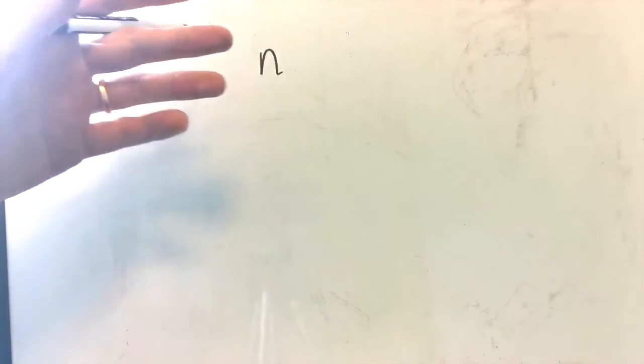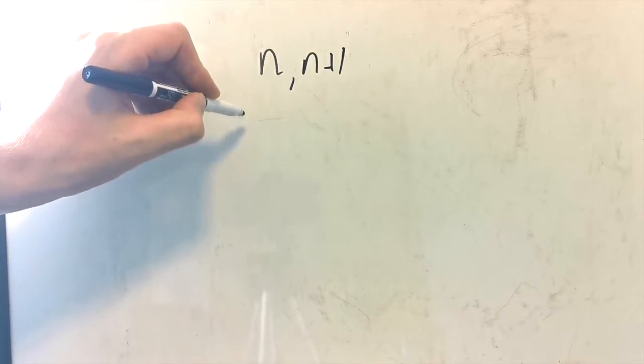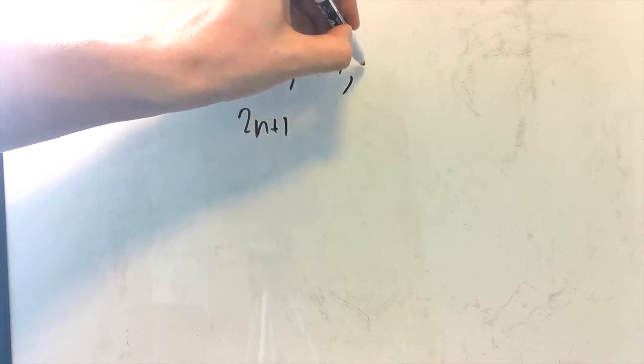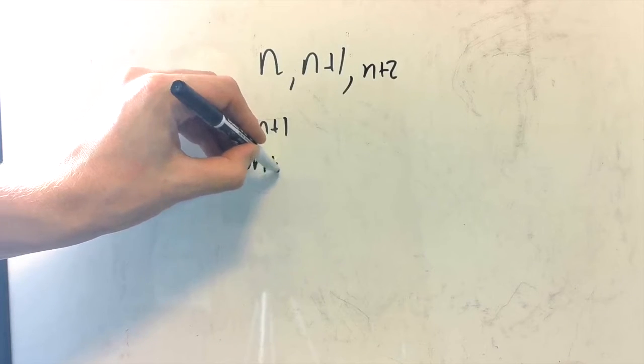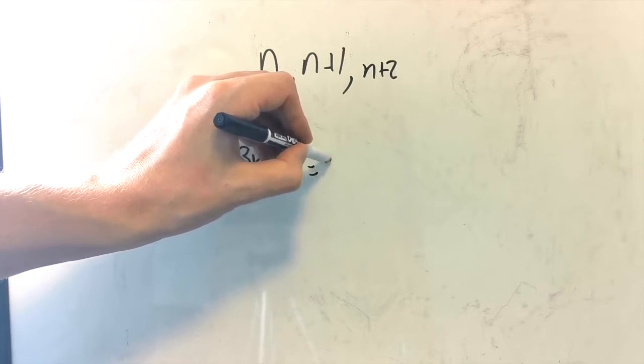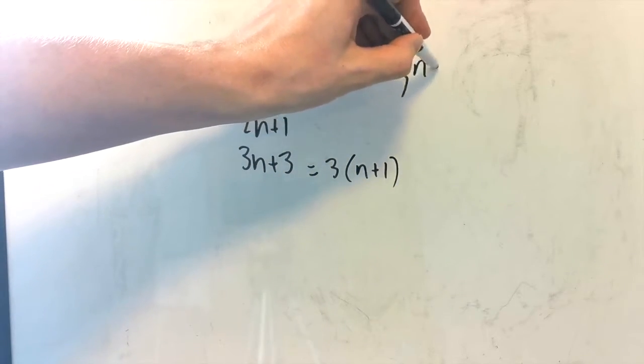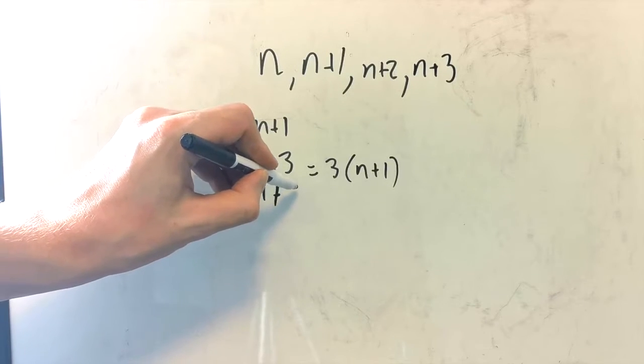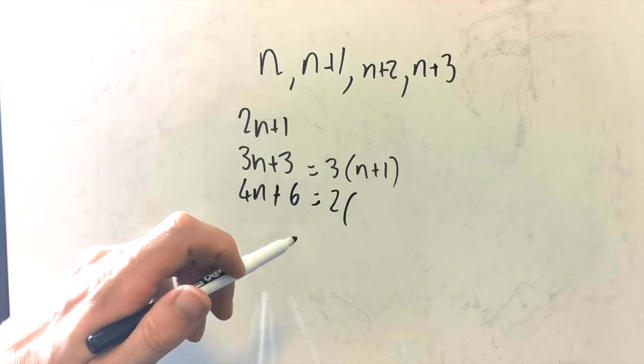So the sum of the first one is n, the sum of the first two is 2n plus 1, that's not hugely interesting. The sum of the first three, we just did that. That is divisible by 3. Now, let's try the sum of the first four. You get 4n plus 6. This is divisible by 2, and not by 4.